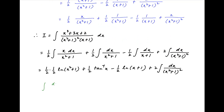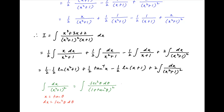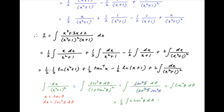To evaluate the integral of dx over (x squared plus 1) squared, substitute x equals tan theta, so dx equals sec squared theta d theta. The integral becomes sec squared theta d theta over (1 plus tan squared theta) squared. Since 1 plus tan squared theta equals sec squared theta, this simplifies to integral of sec squared theta d theta over sec to the power 4, which equals integral of cos squared theta d theta.